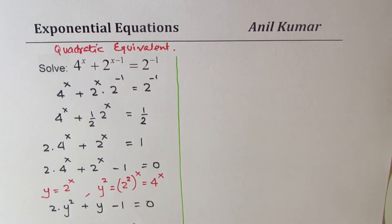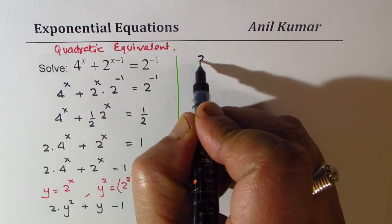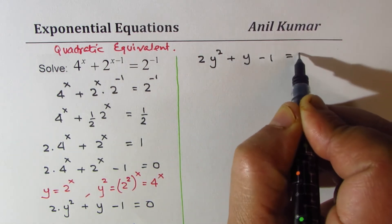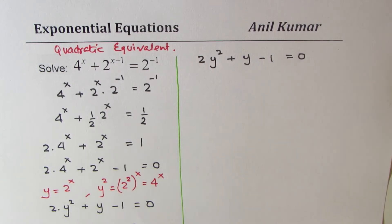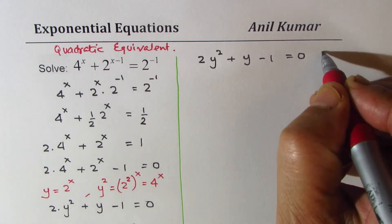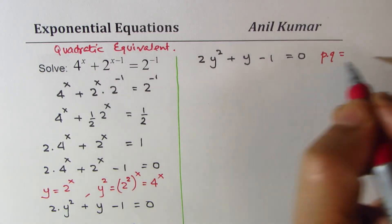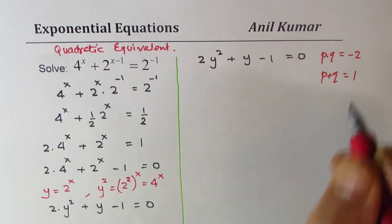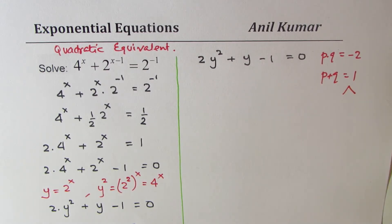Now, we can use quadratic formulas. So let me rewrite this here. So we have 2 times y square plus y minus 1 equals 0. Now, let's factor it. We are looking for product of two numbers as minus 2 and sum of two numbers as 1. Clearly, the numbers are positive 2 and minus 1.